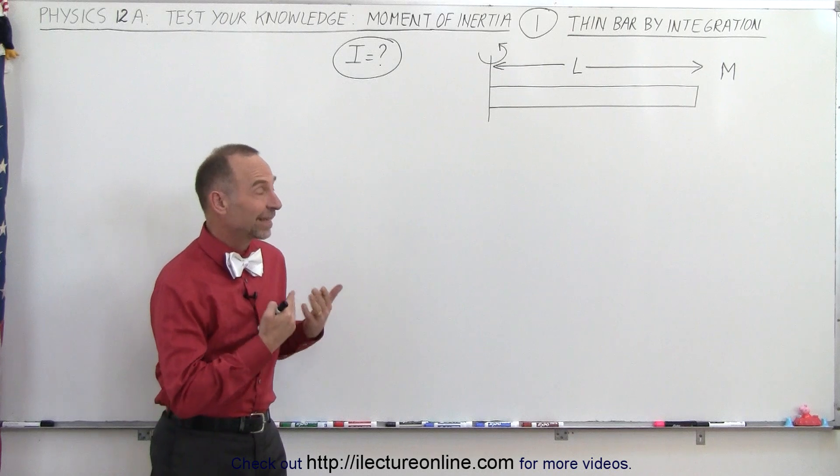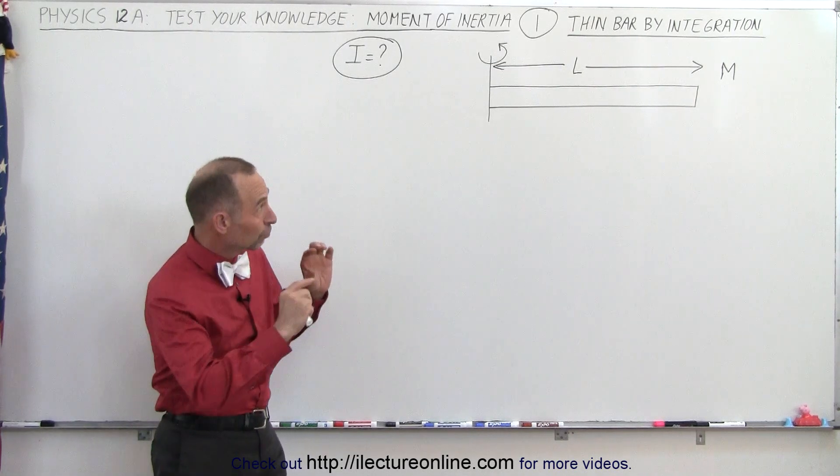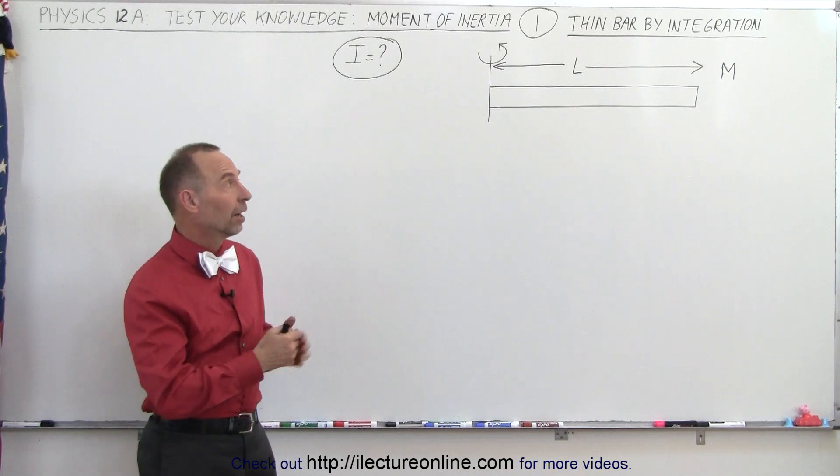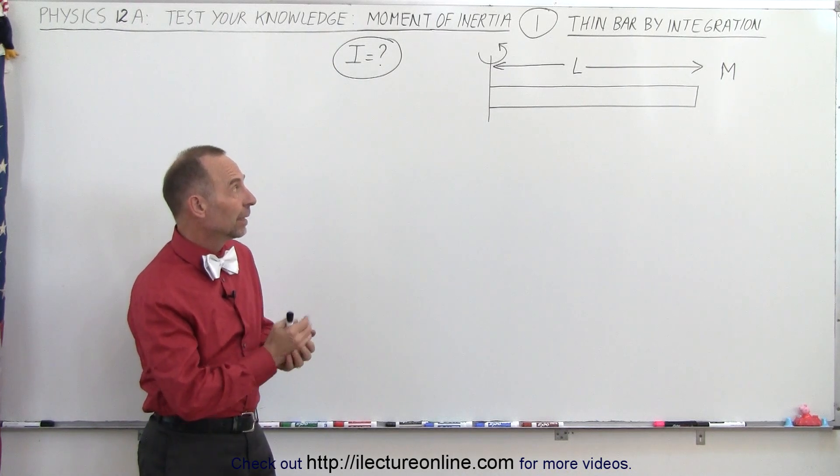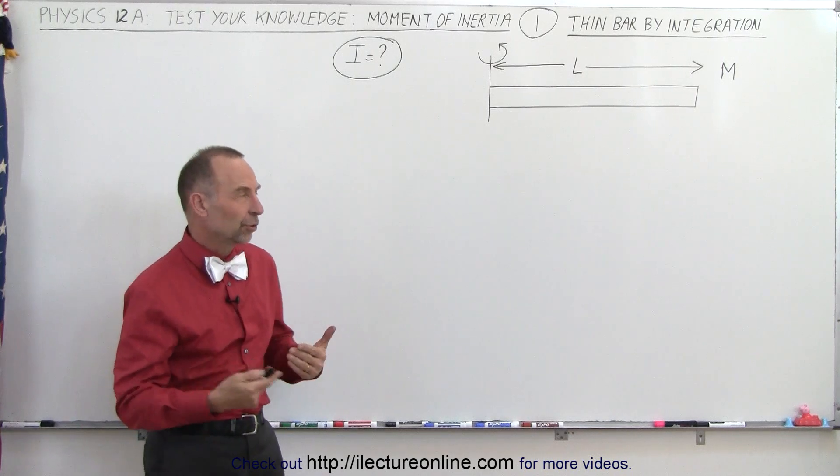We're going to start by showing how to calculate the moment of inertia of a single, what we call a thin bar, of length L of mass M, rotating about one of its ends. So what would be the moment of inertia?